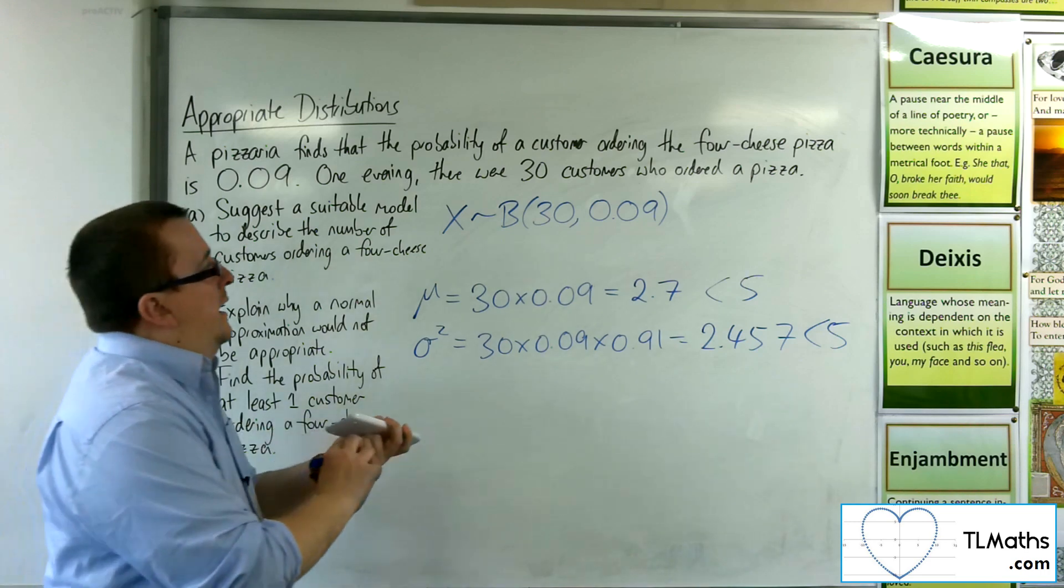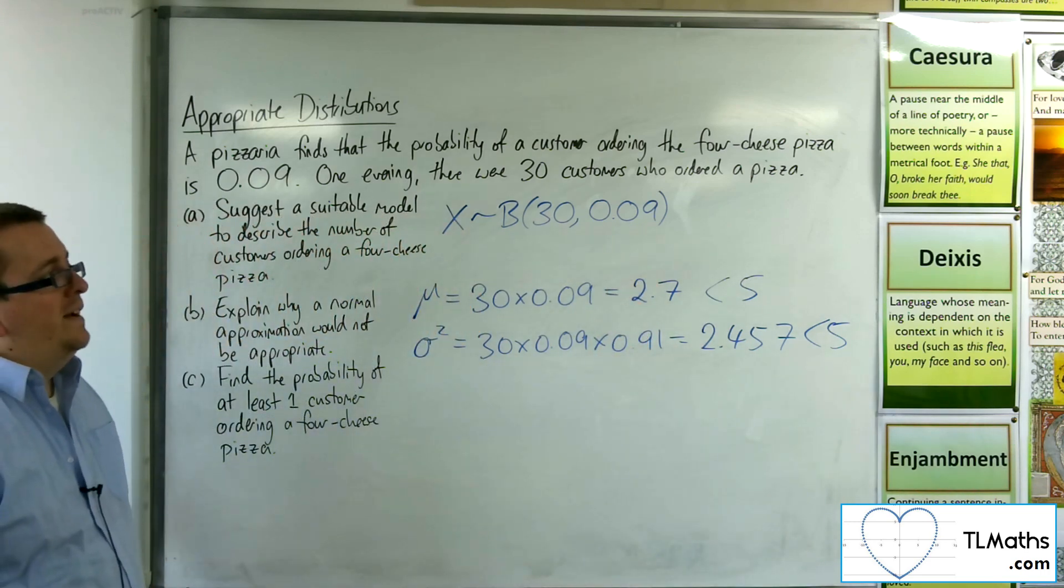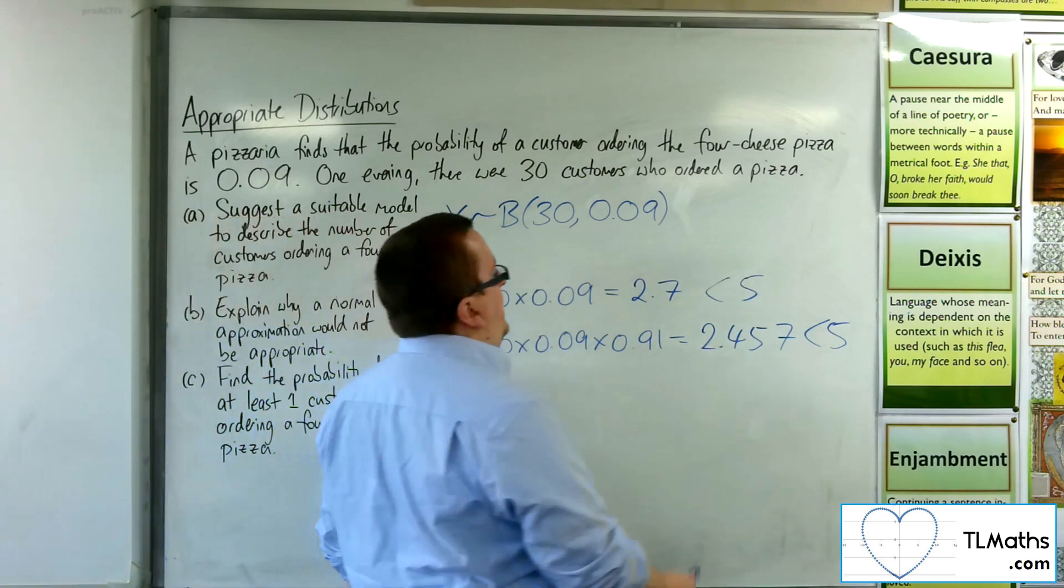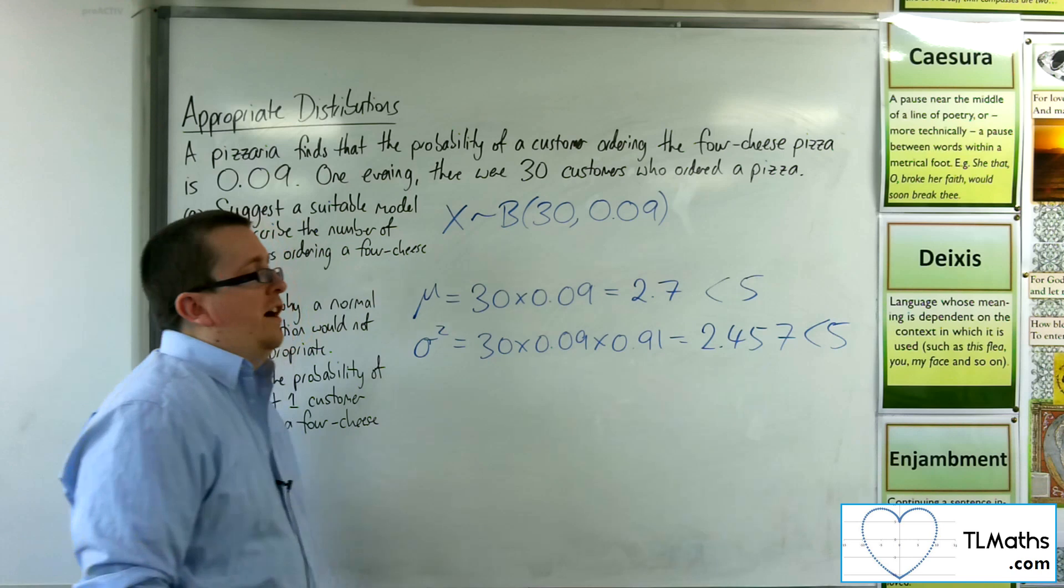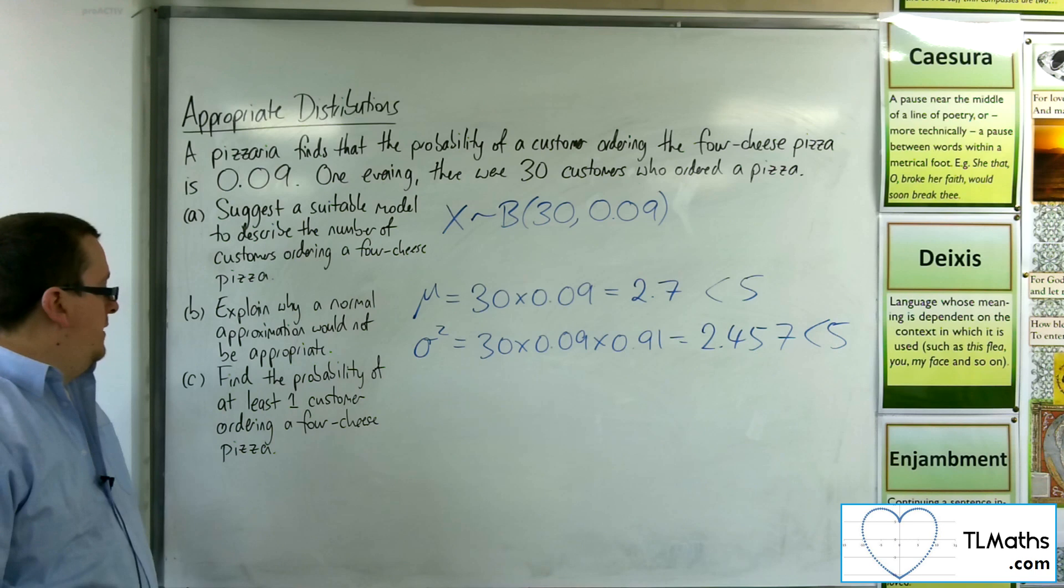Both of these are less than that gold number 5. The probability is very small. It's not close to 0.5. And n is not particularly large. It's not large enough to bring these values up to something that's larger than 5. And so that is why a normal approximation would not be appropriate in this case. It wouldn't give you a very good approximation at all.